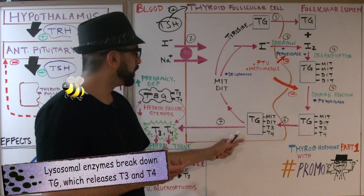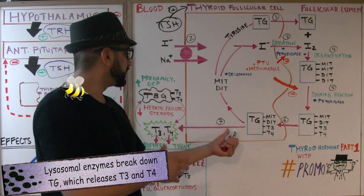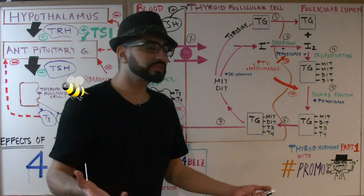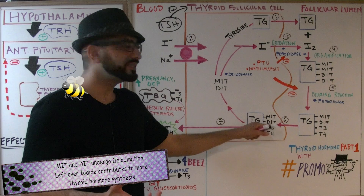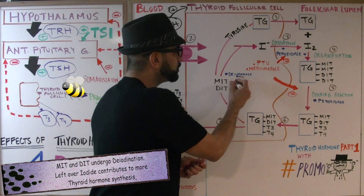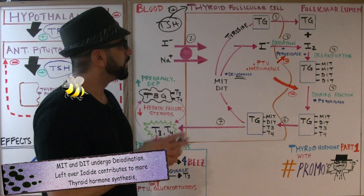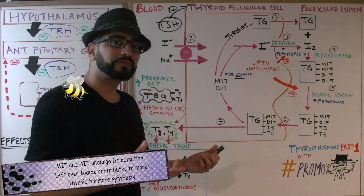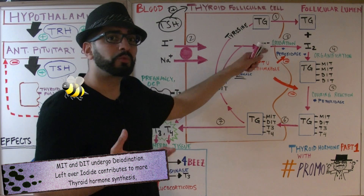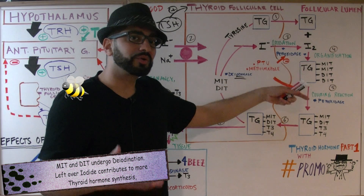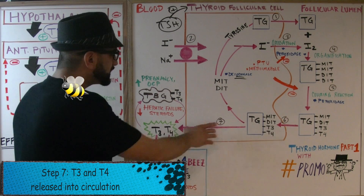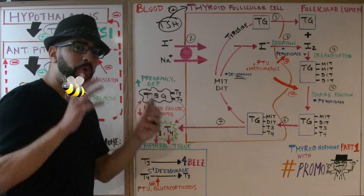The thyroglobulin molecule is broken down by lysosomal enzymes, which release T3 and T4. T3 and T4 then make it out into the circulation. The remaining MIT and DIT undergoes deiodination through deiodinase — we remove the leftover iodide, which can be recirculated and reused for more synthesis of thyroid hormone.